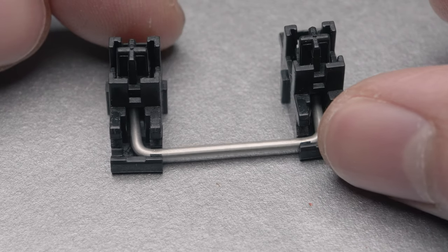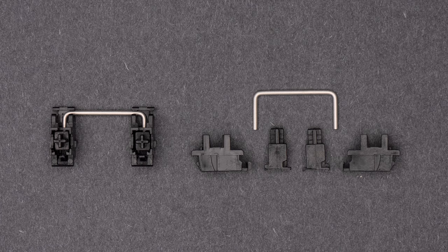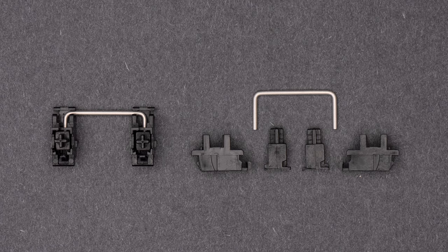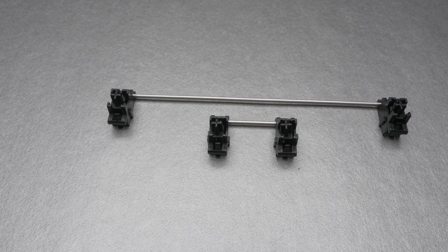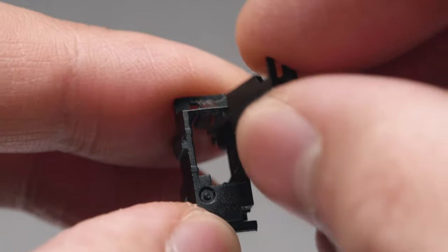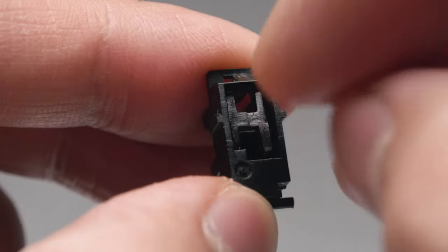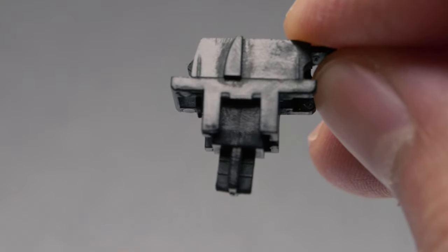Let's build your stabilizer which is made from 2 inserts, 2 housings and 1 metal bar. If you prefer quiet sounding stabilizers, you can lube or grease them. The long and short stabilizers are built the same way. You'll start by picking up an insert and housing. Align the parts that are shown on screen, then drop the insert into the housing. If successful, you should see the stem sticking through.